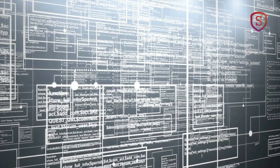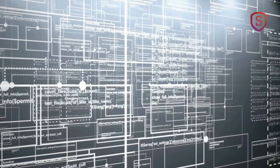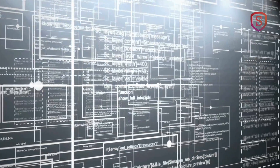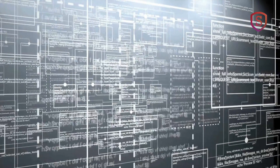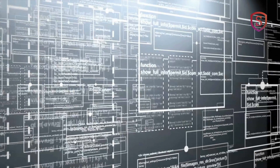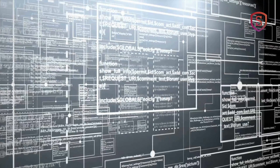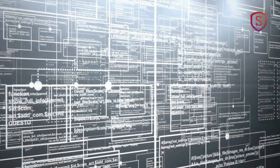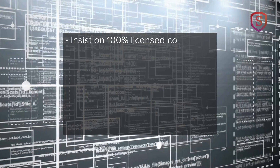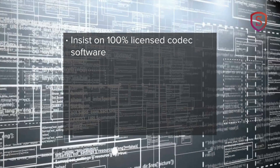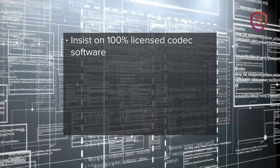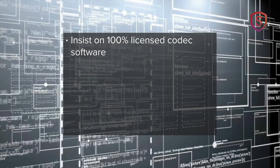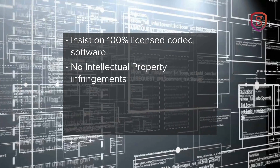Now, what about the good news? The good news for manufacturers and end-users is that the cost to properly license these encoding software libraries — that is, the real ones — is actually very low. It's nearly insignificant within the cost of paid-for commercial encoding software. So in choosing stream encoding software, it's important to insist on 100% licensed software code.